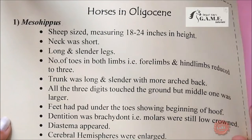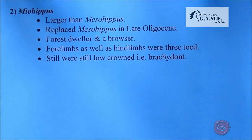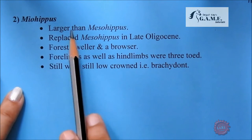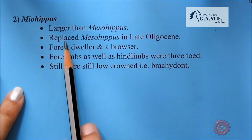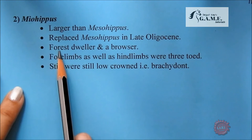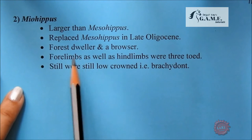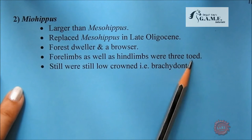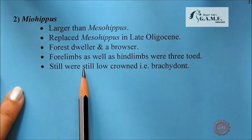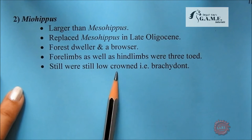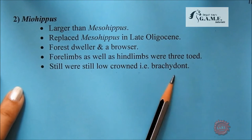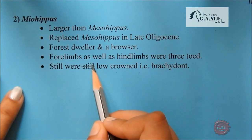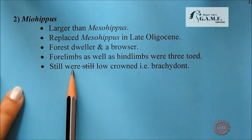Miohippus was larger than Mesohippus and replaced it in the late Oligocene. It was a forest dweller and browser; forelimbs as well as hind limbs were three-toed. Dentition was still brachydont — low-crowned.